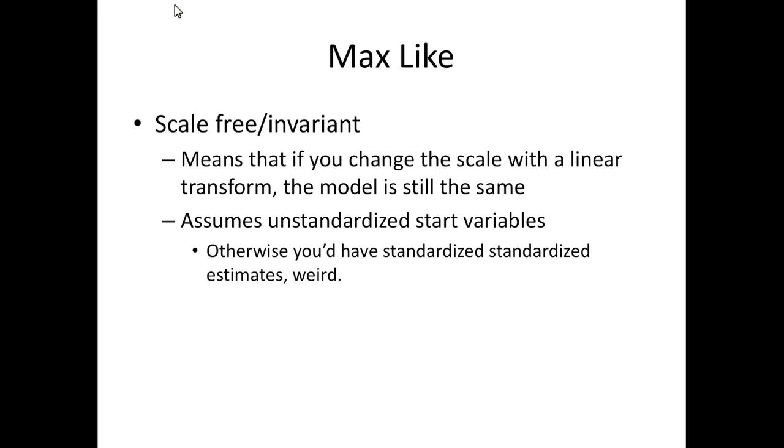So another thing about maximum likelihood in particular is it's considered a scale-free or invariant type of fitting estimation, or sometimes called extraction. And what that means is if I linearly transform the data. So let's say I realized halfway through, and this has happened to us before, where we downloaded our data from Qualtrics and it scored everything from one to seven, which is pretty normal. That's how it picks the scoring because that's a normal set of scoring for a Likert scale. But you went back and you looked at your scale and you realized, oh, this was supposed to be scored zero to six, or it could be negative two to two. It could be totally different.